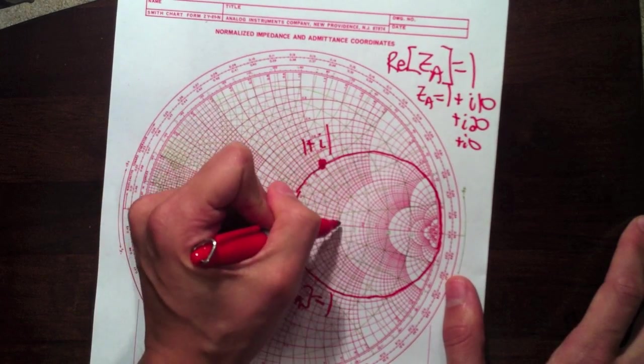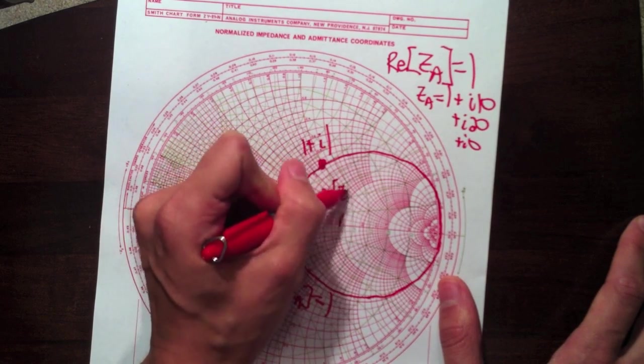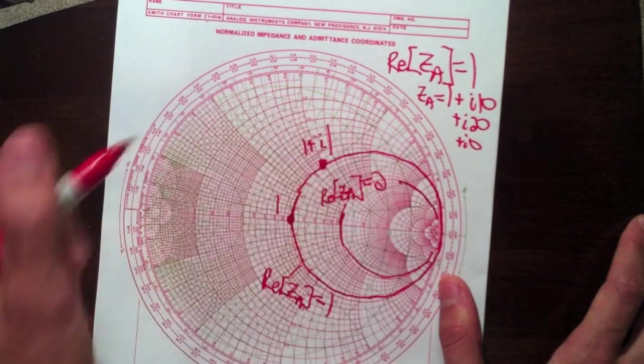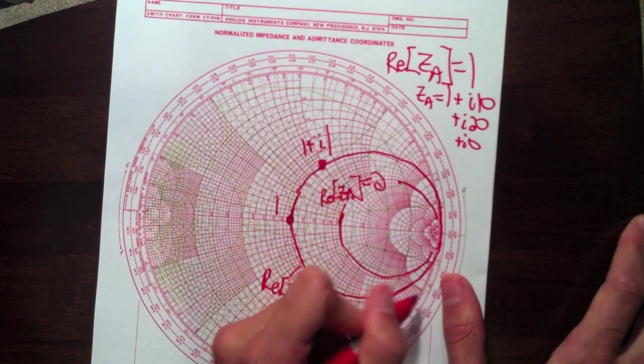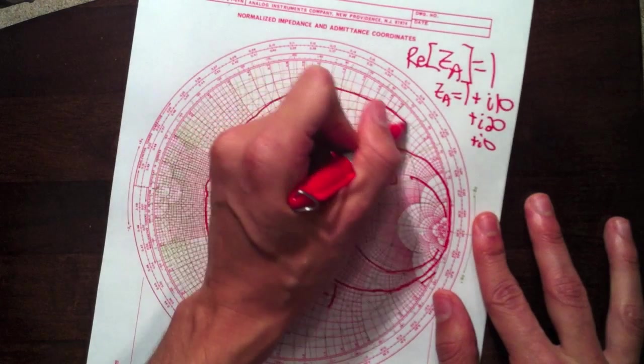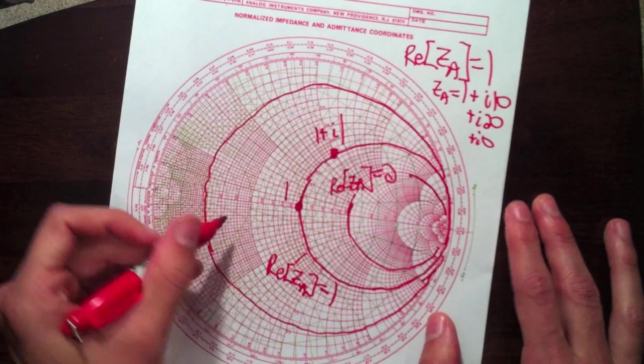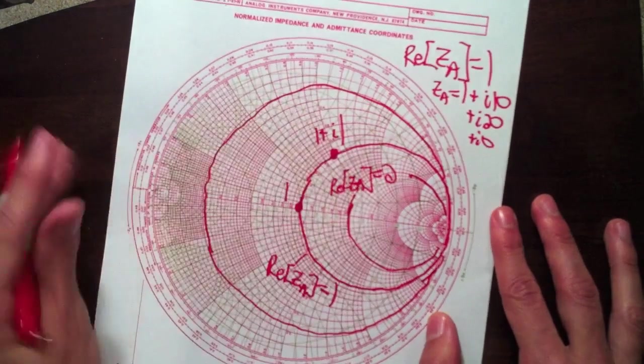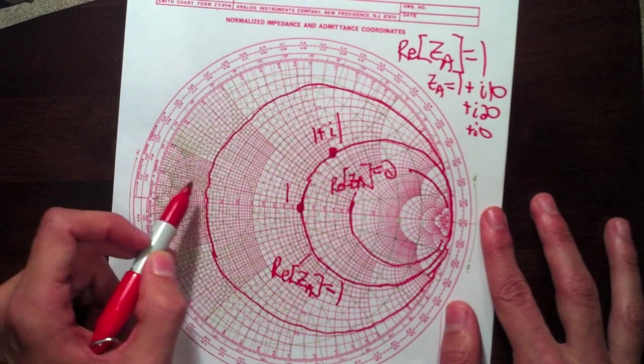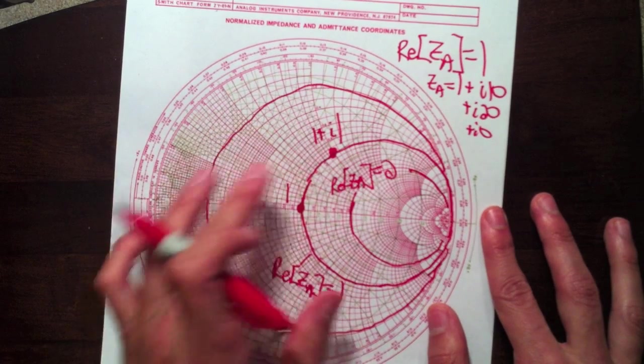So what about real part of the impedance equals two? Well, that's this circle right here. So first off, we see there's all these circles on the Smith chart. These are constant resistance circles. So each one of these corresponds to a point or the set of all values where the real part of the antenna impedance is constant. So that's where a lot of these lines come from.